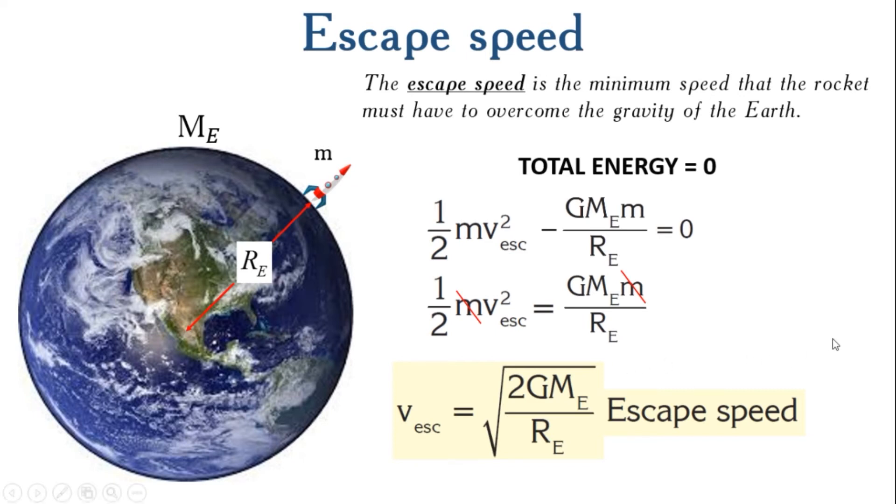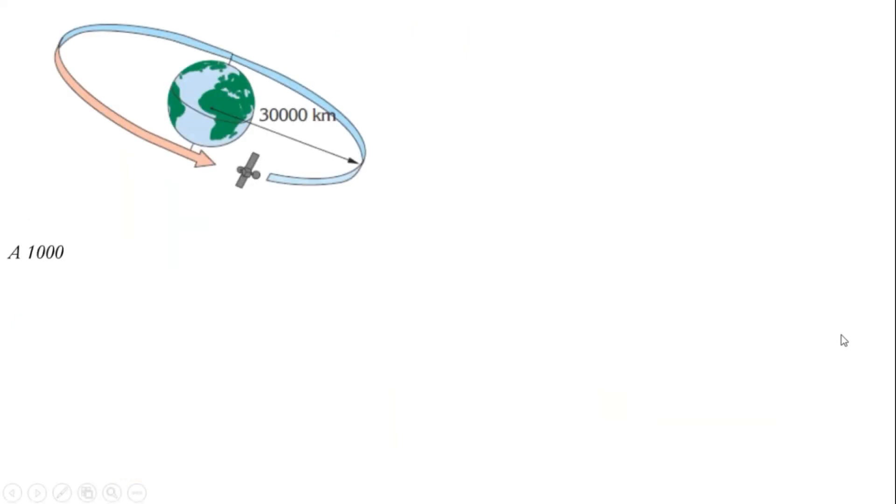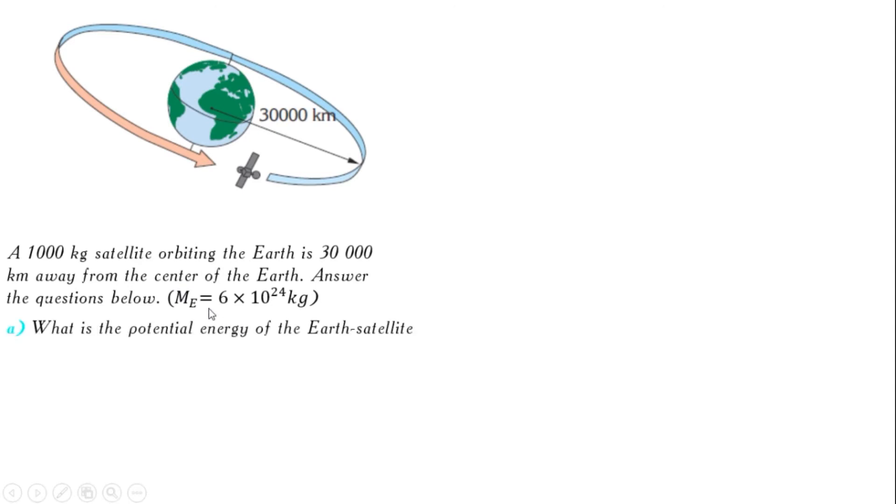Now let's see these calculations in the question. The question is this: A thousand kilogram satellite orbiting the earth is 30,000 kilometers away from the center of the earth. Answer the questions below. Mass of the earth is 6 times 10 to the power of 24 kilograms. Now we know the mass of satellite, the distance between the center of the earth and the satellite, and mass of earth. Questions: A. What is the potential energy of the earth's satellite system? B. What must the speed of the satellite be to escape from this orbit?